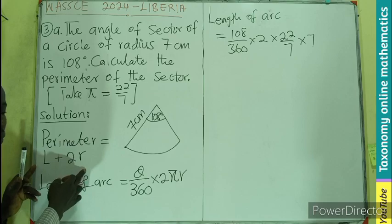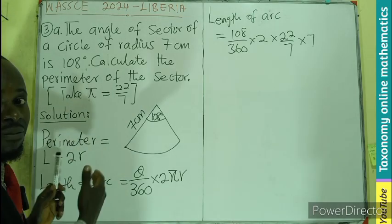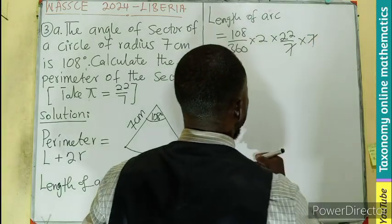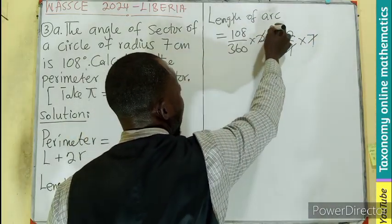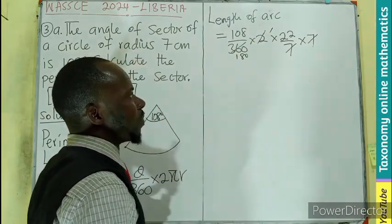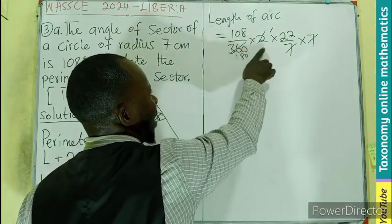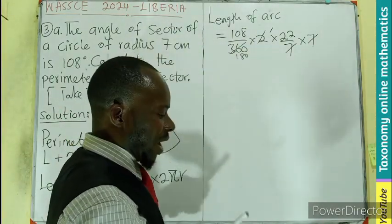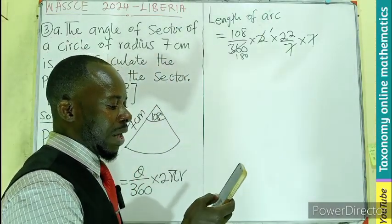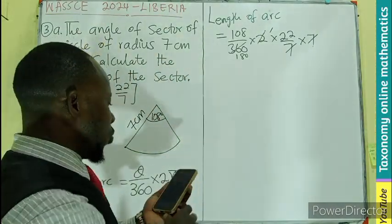I believe 7 will cancel this. Then we are left with 108 times 22 divided by 180. Let's see what that would be on our calculator.